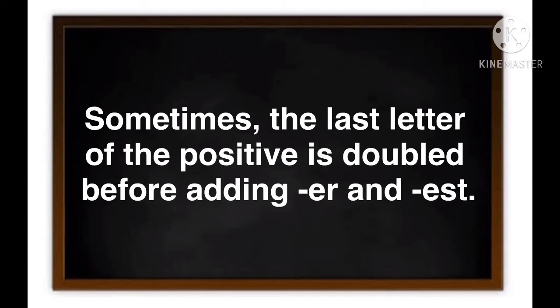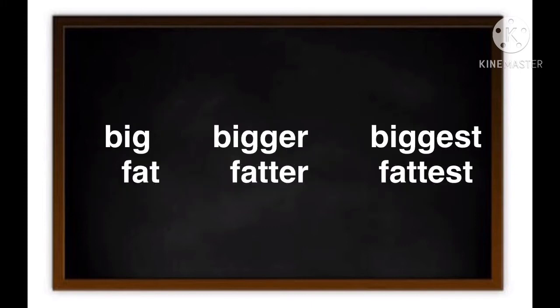Sometimes the last letter is doubled before adding -er and -est. For example, fat is positive. When we're changing it into comparative degree, we double the letter T twice to make fatter, and for superlative, fattest.